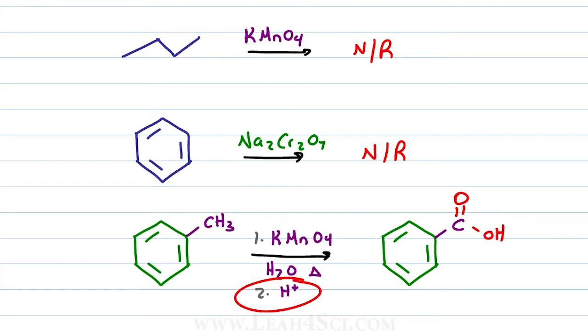Notice that I had to add H plus in the second step because potassium permanganate operates under basic conditions giving us the carboxylate anion. Adding H plus in the next step will protonate the oxygen to give us the neutral carboxylic acid.